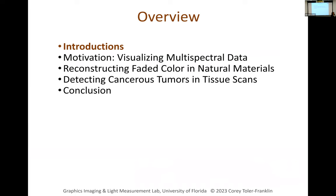I'm going to begin by introducing my area of research and teaching in computer graphics and computer vision. Then we'll look at some motivating examples so you can see why this is an interesting and useful problem. Then I'll focus on two applications: reconstructing fading color in natural materials, and finding cancerous tumors in tissue scans.